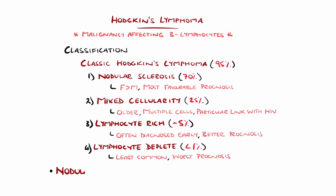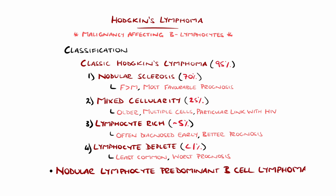The other 5% of cases not classified as classical Hodgkin's lymphoma are nodular lymphocyte-predominant B cell lymphoma, 75% of which are diagnosed at stage 1 and have an excellent prognosis.